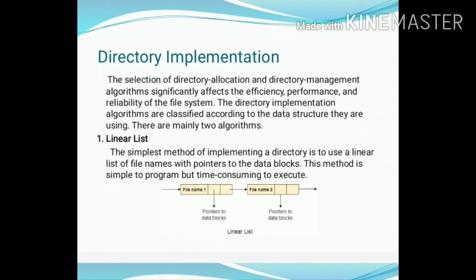The first one is the linear list. The simplest method of implementing a directory is to use a linear list or linked list. A linear list contains file names and a pointer to the data block. This is the data structure used in directory implementation.